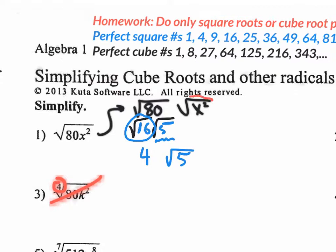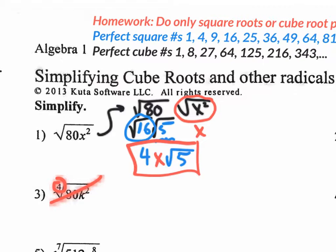Looking at the square root of x² — remember that the square root is really the power of one-half, which is like dividing the exponent by 2. So the square root of x² is just x, no more square root. Putting it all together, I place that x between the 4 and the square root of 5. The final answer is 4x√5.